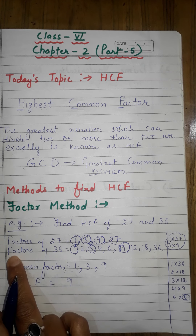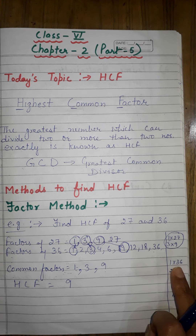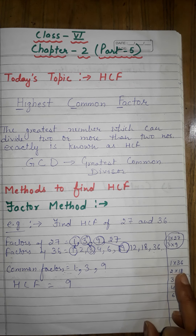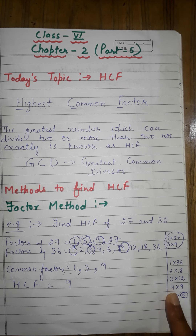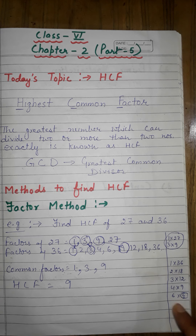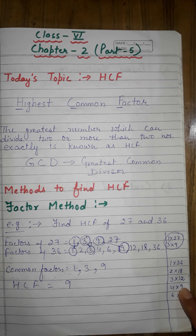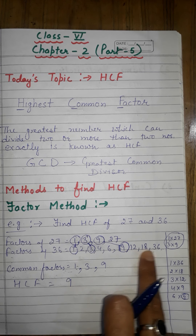Next I will write the factors of 36. Starting from 1: 1 × 36 = 36. Then 2 × 18, 3 × 12, 4 × 9 — 36 is divisible by these. 5 does not divide 36. 6 × 6 = 36. After 6, the next numbers — 9, 12 — are already listed, so we stop. Factors of 36 are: 1, 2, 3, 4, 6, 9, 12, 18, and 36.